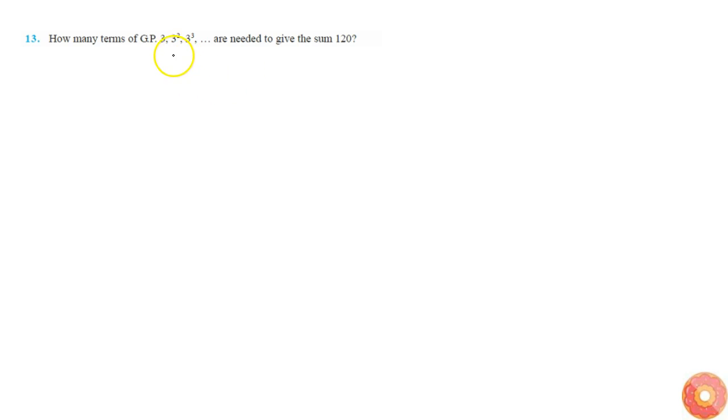In this question we are asked how many terms of the GP 3, 3², 3³, and so on are needed to give the sum 120. So that means Sn is equal to 120 and we need to find n.